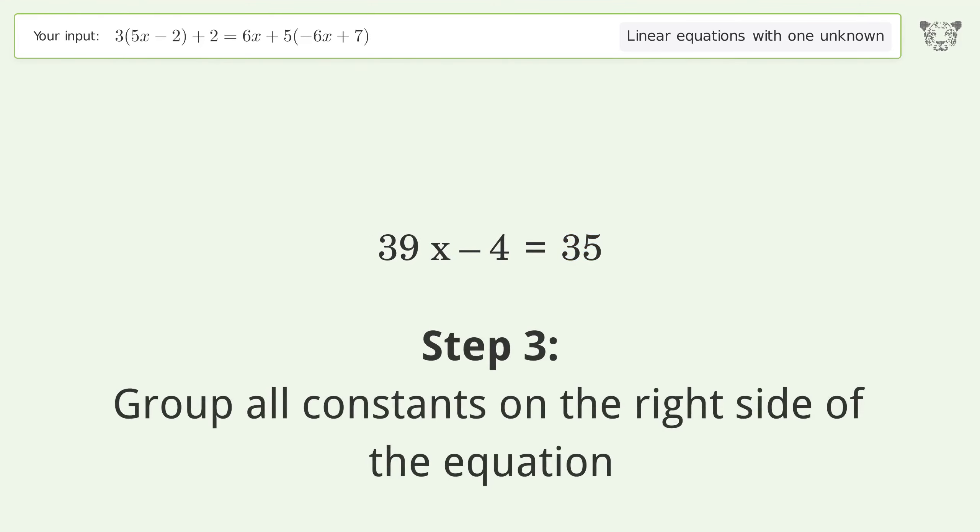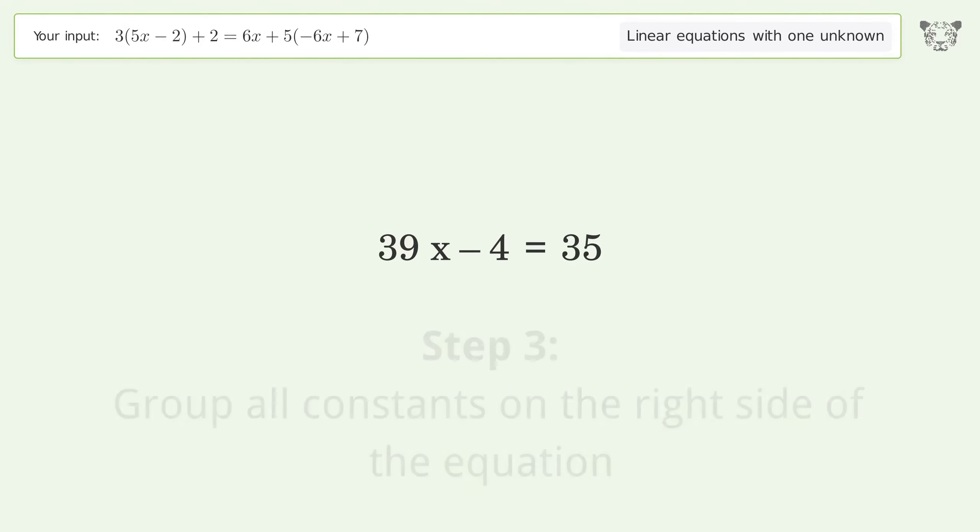Group all constants on the right side of the equation. Add 4 to both sides, then simplify the arithmetic.